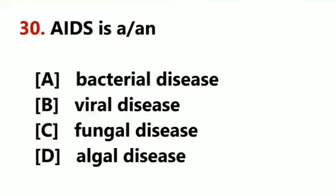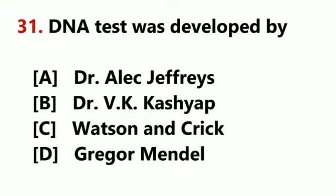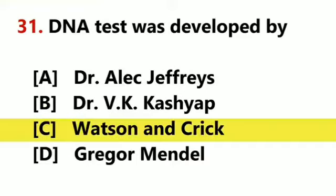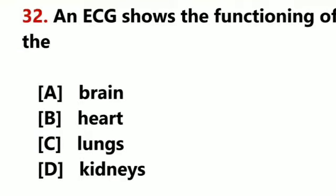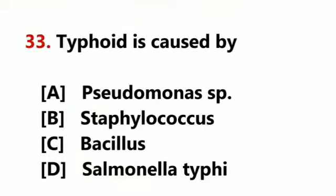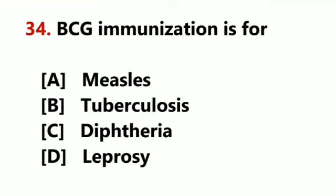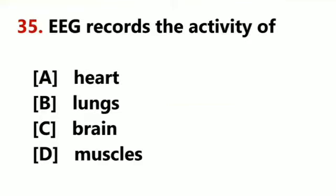AIDS is a viral disease. DNA test was developed by Watson and Crick. An ECG shows the functioning of the heart. Typhoid is caused by Salmonella typhi. BCG immunization is for Tuberculosis.